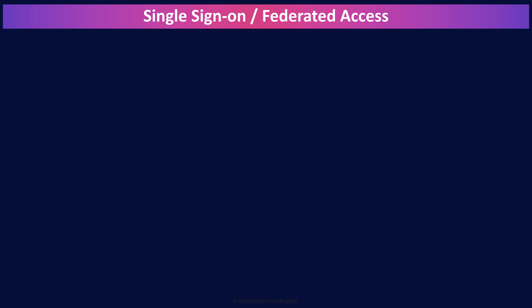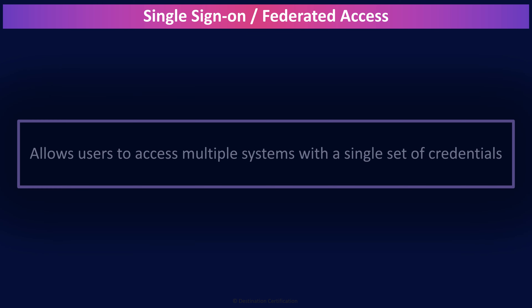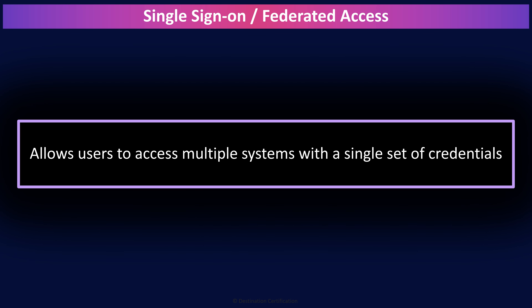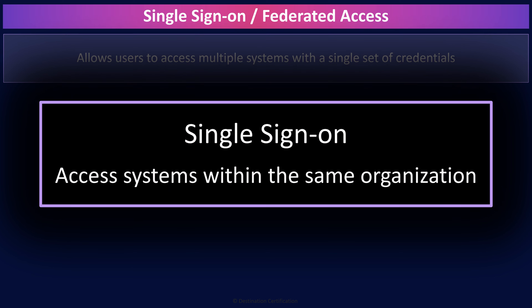Single sign-on and federated identity management are both about allowing users to access multiple systems with a single set of credentials. Users love this, as they need to only remember one terrible password instead of multiple terrible passwords, and they only need to authenticate once to magically get access to all their applications. Single sign-on protocols and systems are designed to work within one organization.